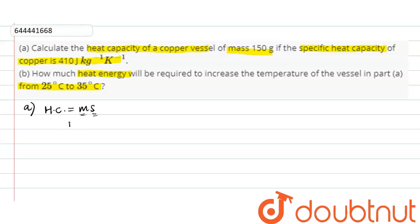For this question, the heat capacity equals mass times specific heat. Since the specific heat capacity is given in joules per kg per kelvin, we need mass in kg. So mass is 150/1000 = 0.15 kg, multiplied by specific heat capacity 410. This comes out to be 61.5 joules per kelvin.